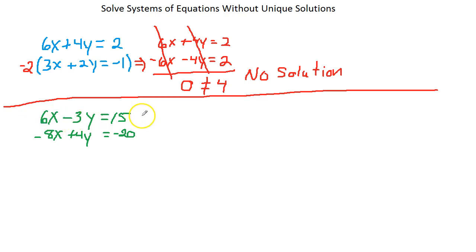So what times 3 gives you 12? 4. So we're going to multiply the top equation by 4. What times 4 gives you 12? 3. We'll multiply the bottom equation by 3. And since they already have opposite signs, we don't have to worry about negatives.